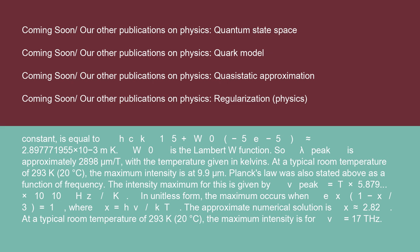Planck's Law was also stated as a function of frequency. The intensity maximum is given by ν_peak = T × 5.879 × 10¹⁰ Hz/K. In unitless form, the maximum occurs when e^x(1 − x/3) = 1, where x = hν/kT. The approximate numerical solution is x ≈ 2.82. At a typical room temperature of 293 K (20°C), the maximum intensity is for ν = 17T Hz.